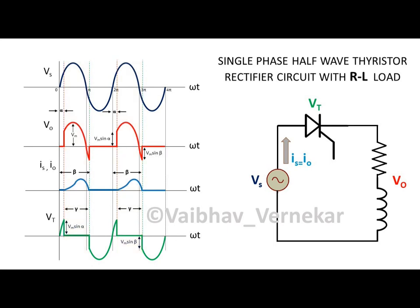The circuit returns output for the positive half but it remains switched off in the negative half. Hence, this circuit is also called a half wave rectifier.